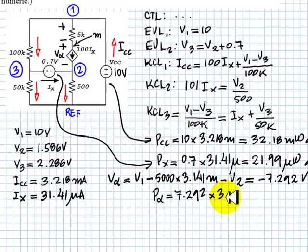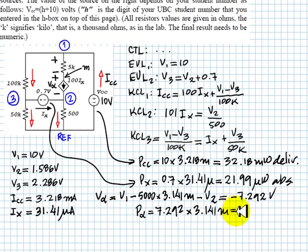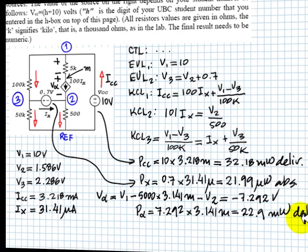Voltage 7.292 that multiplies the current, the current is 3.141 milli. 22.9 milliwatts, which is delivered power. And this finishes the solution to this question. Thank you very much.